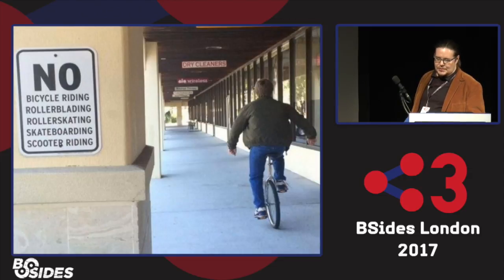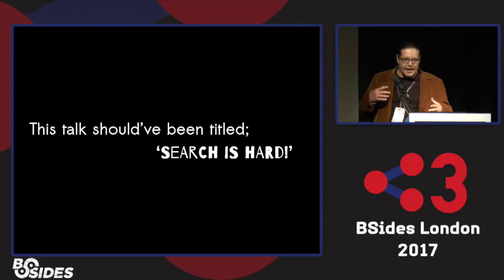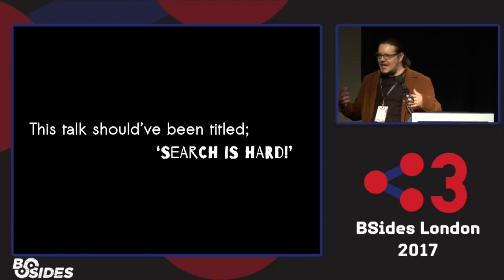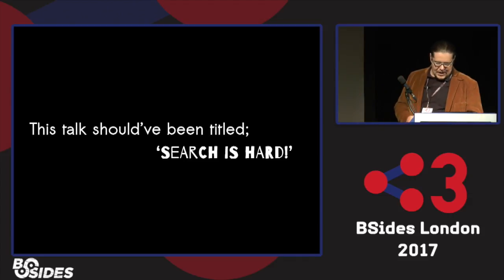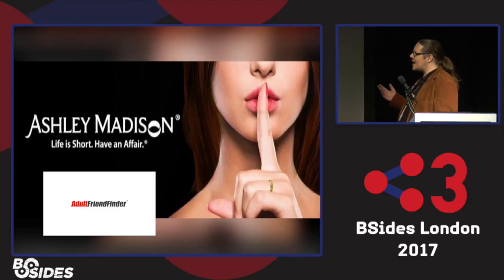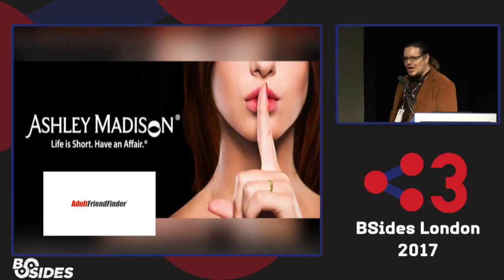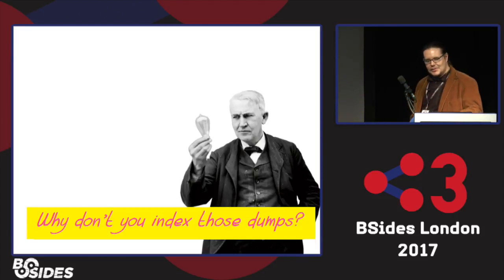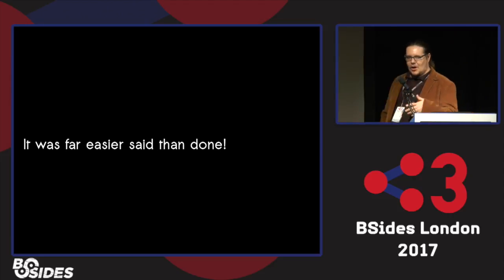This talk should have been called 'Search is Hard.' It's about building a search engine for third-party data breaches — not a breach notification platform, but an actual kind of showdown of data dumps. When I started, I had this basic idea to take the Ashley Madison and Adult Friend Finder dumps and see if we could get a search-like experience out of it. Why not index these dumps? With everything, it was a lot easier said than done.